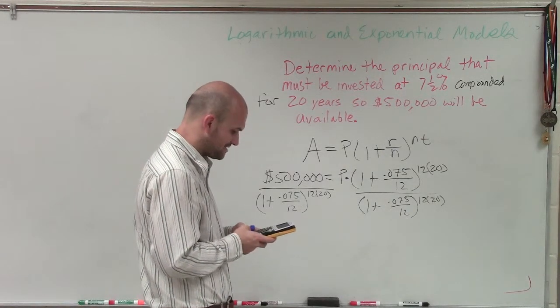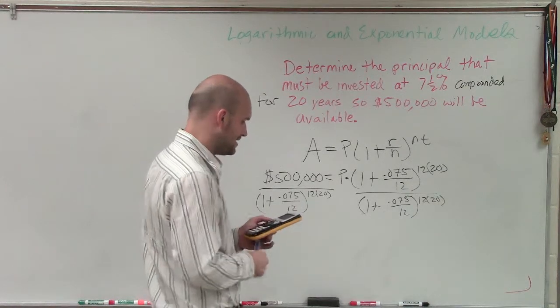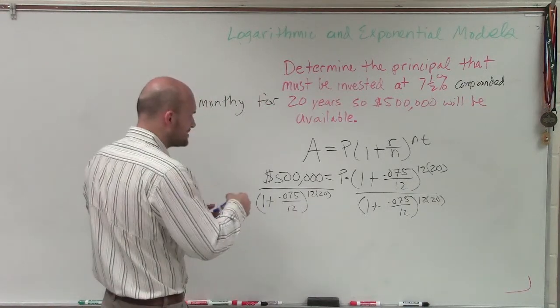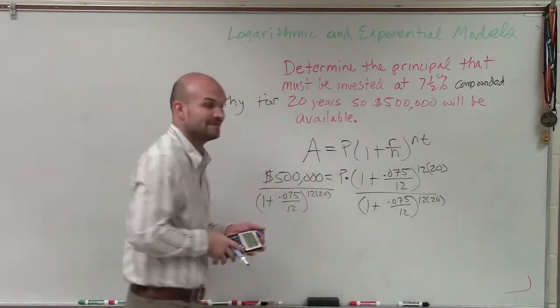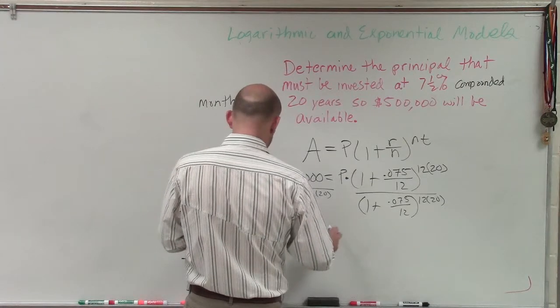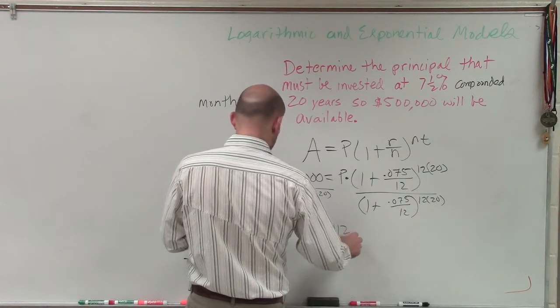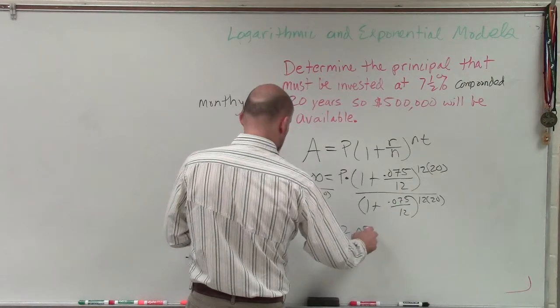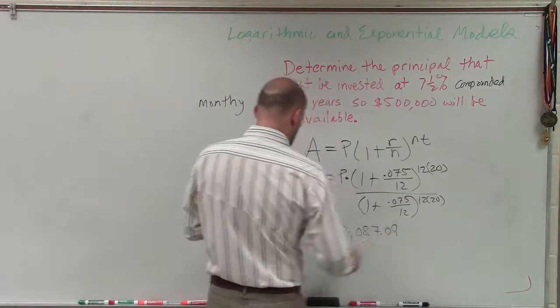And then I do 500,000 divided by that answer. And therefore, for me to have my retirement at $500,000 in 20 years at an interest rate of 7.5% compounded monthly, I'm going to have to have an initial principal value equal to $112,087.09.